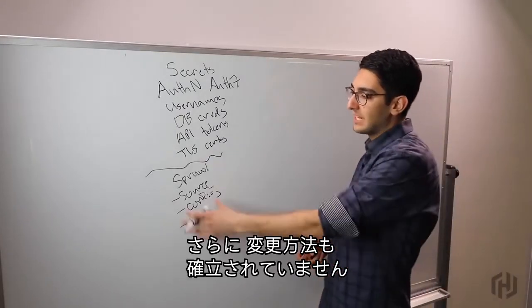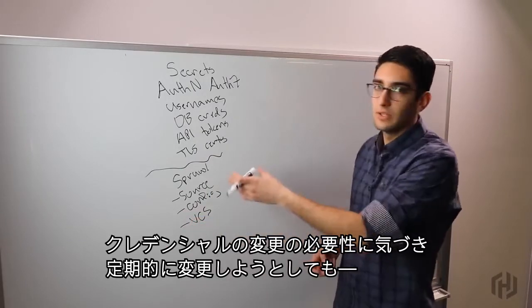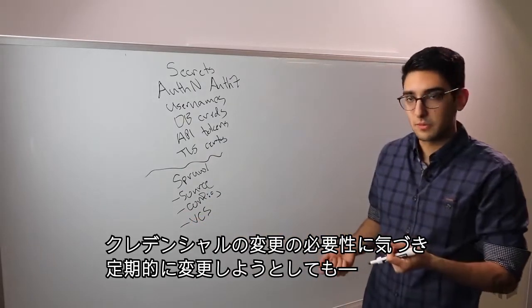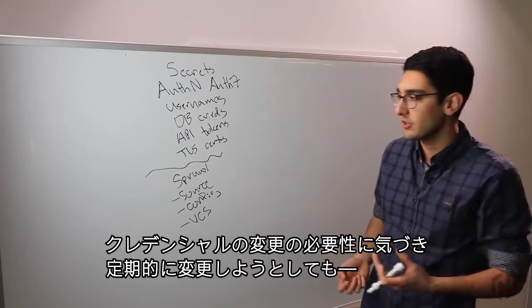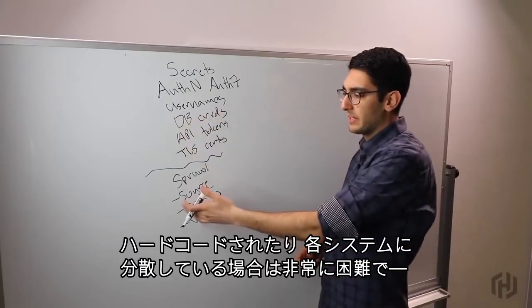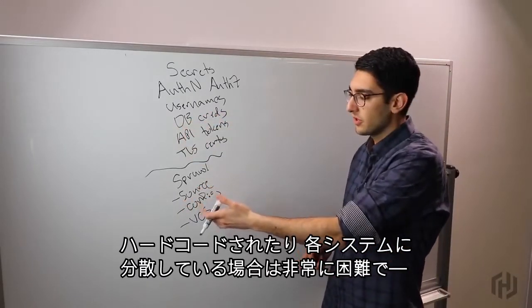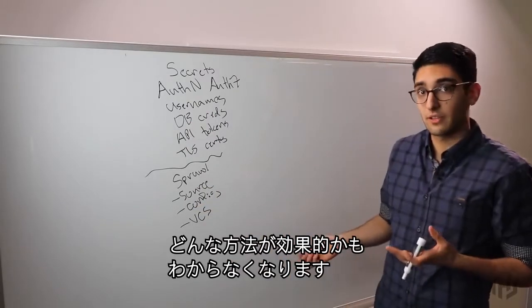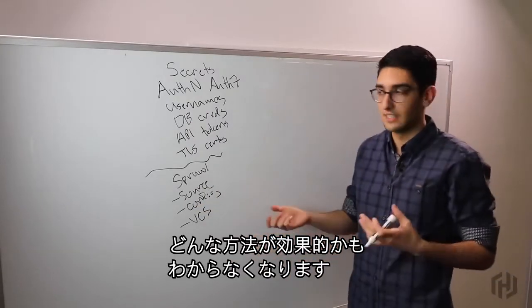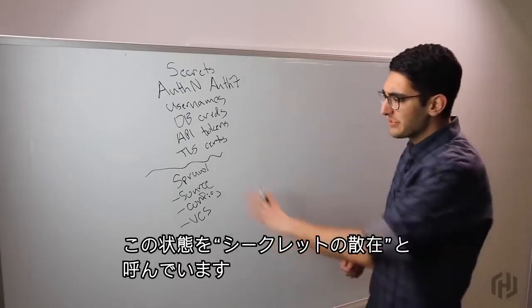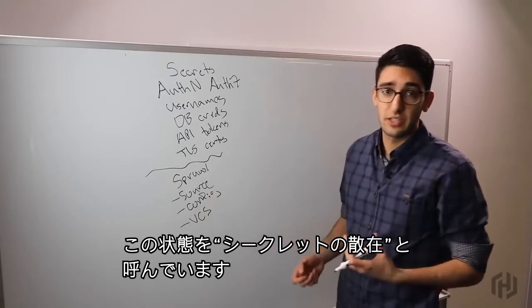Worse yet, how do we actually rotate any of these things? If we realize we do need to change our database credential, there's been a compromise, or we're doing a periodic rotation, it's very difficult if it's hard-coded in our source code or strewn about in so many different systems. This state of the world is what we refer to as secret sprawl.